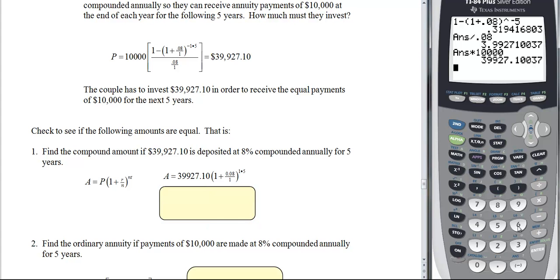So let's pull this down. See if you agree with the positioning. So it would be 39927.10 parentheses 1 plus 0.08 raised to the fifth. So it comes out to be that.